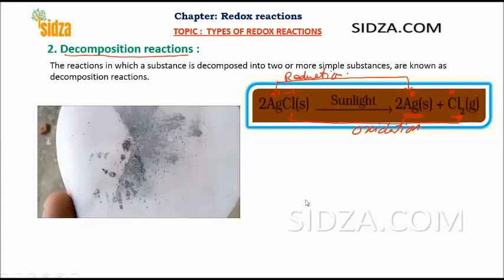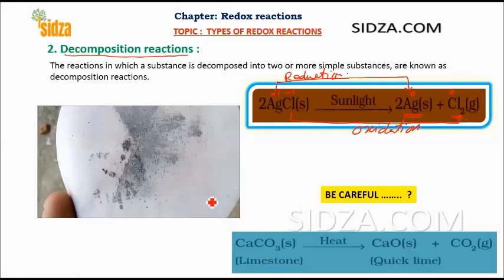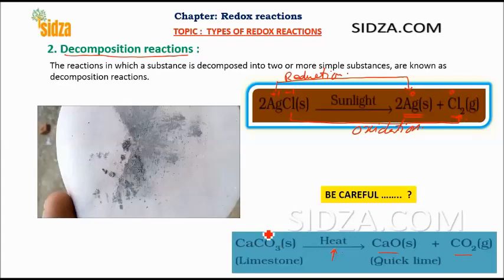There are many examples of decomposition reactions, but you need to be careful — not every decomposition reaction is a redox reaction. For example, calcium carbonate, when strongly heated, breaks down into calcium oxide and carbon dioxide. It is a decomposition reaction — one substance breaks down into two simpler substances — but this is not a redox reaction.